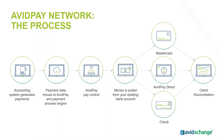The payment flow works like this: the accounting system transfers payments, the payment data moves to Avid Pay, we do Avid Pay control, money is pulled from your existing bank account, and then the supplier receives funds in their preferred method. That can be by MasterCard virtual card — a one-time issued number for that exact amount to that exact vendor, so they can't change the amount or payee. Or Avid Pay Direct, which is Avid Exchange's version of a direct deposit or ACH with an enriched remittance form so the supplier knows exactly what was paid for. Or the good old-fashioned check. At the end, it's the client reconciliation.